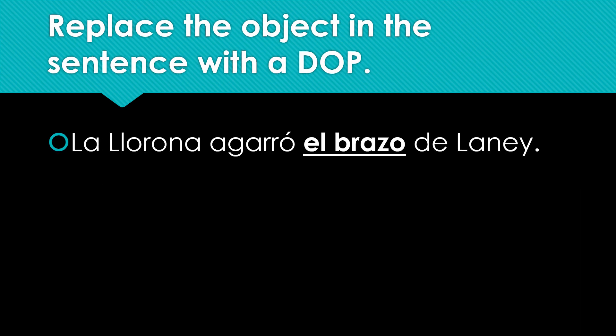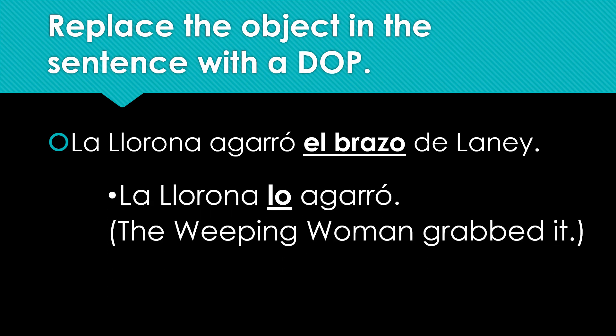Here's another example. Replace the object in this sentence with a DOP. La llorona agarró el brazo de Laini. El brazo is replaced with lo, the DOP, which goes in front of the verb agarró. La llorona lo agarró — the weeping woman grabbed it.